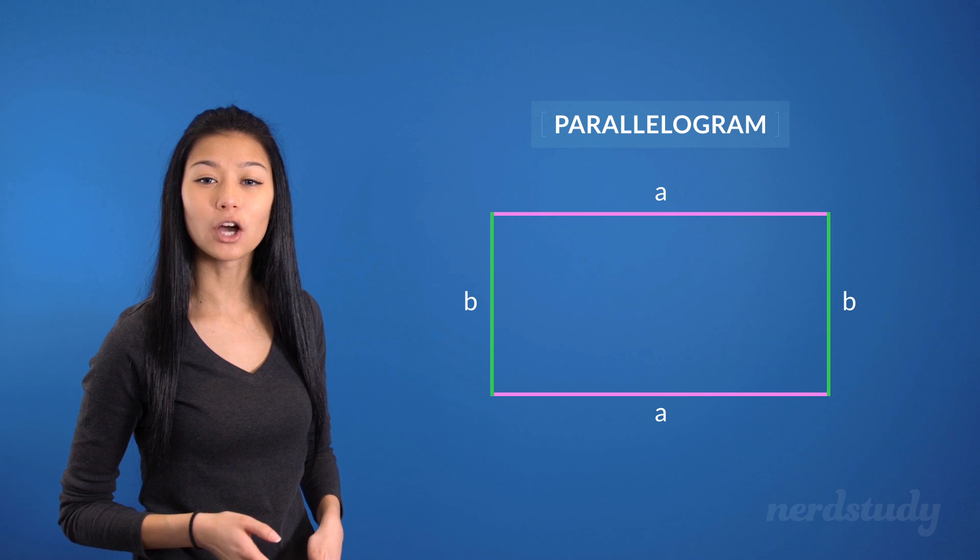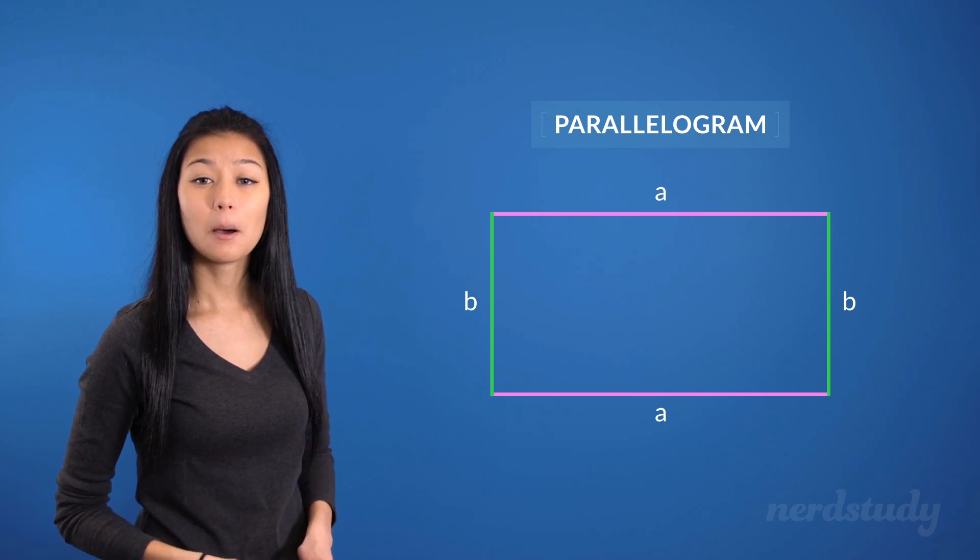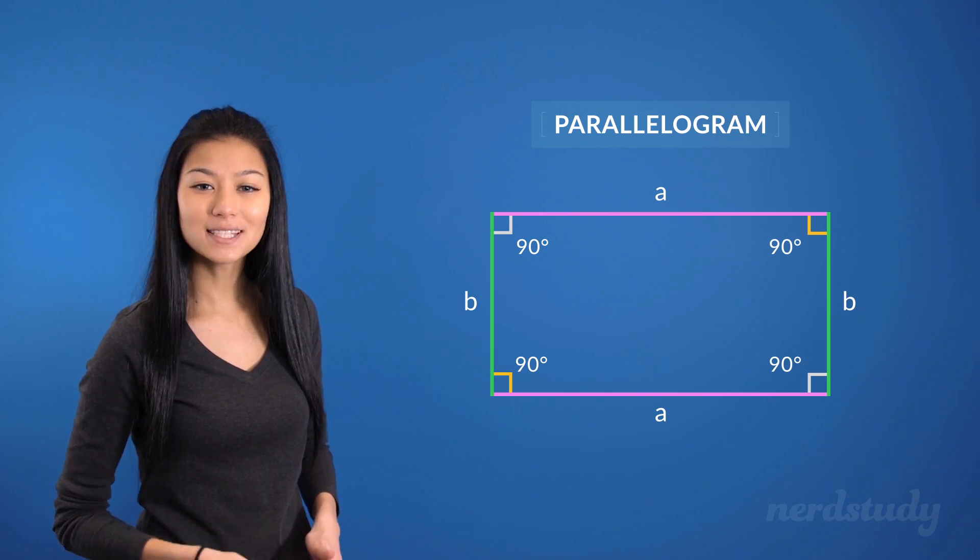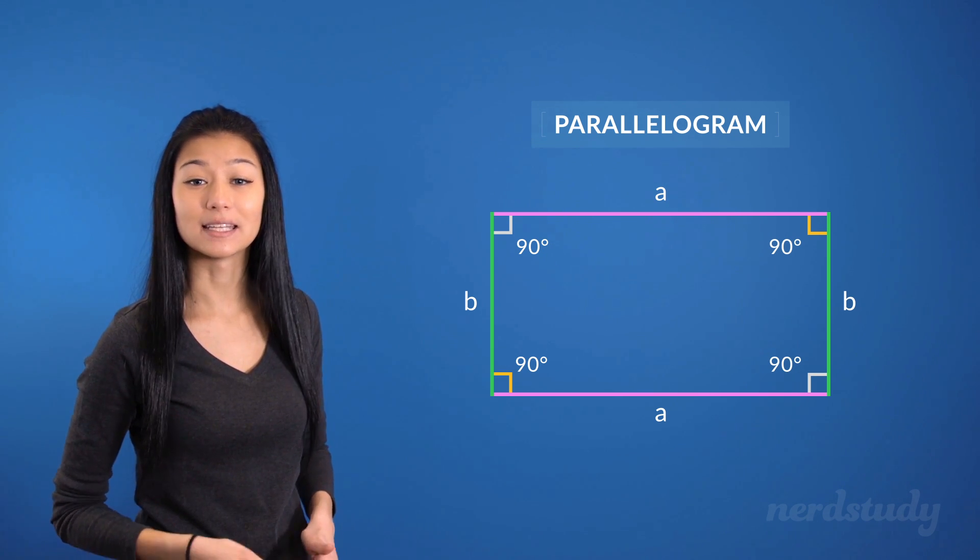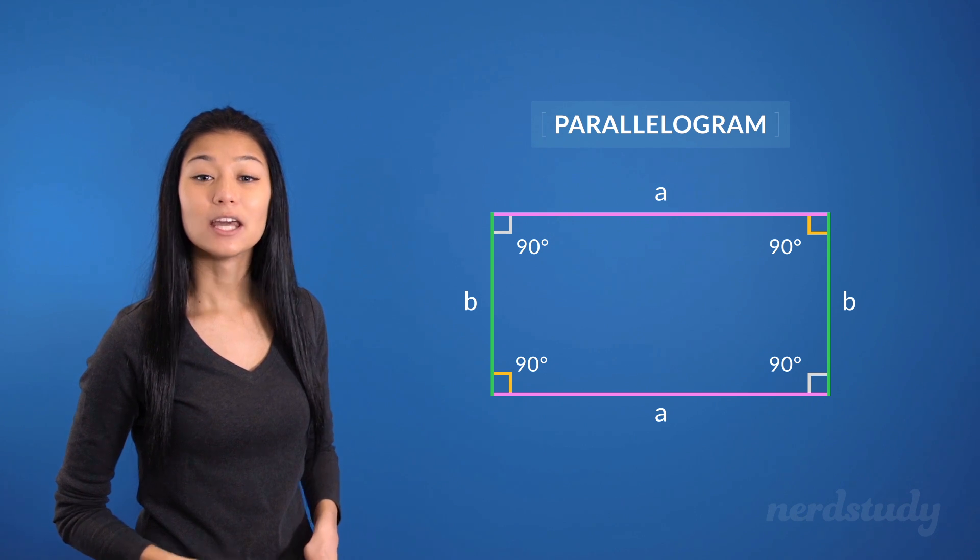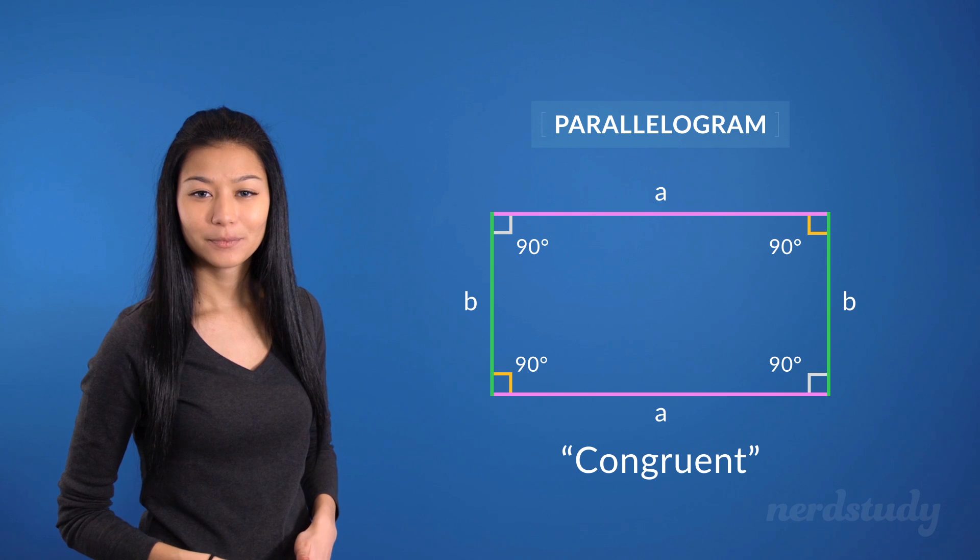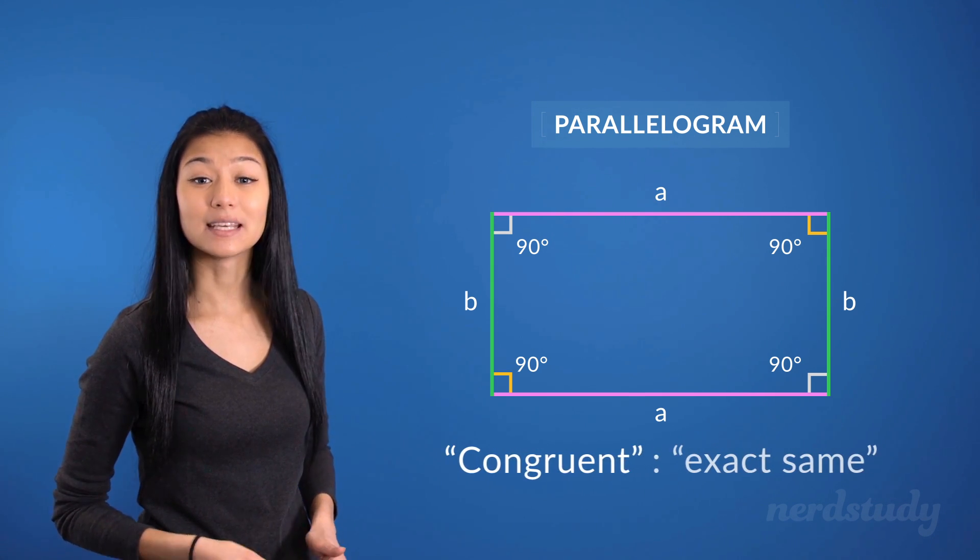Not only are the opposite sides equal in length, but the angles that are diagonally across from each other are also equal. This idea of having equal sides and equal angles can be said in a more mathematical way by using the word congruent. Congruent basically means the exact same.